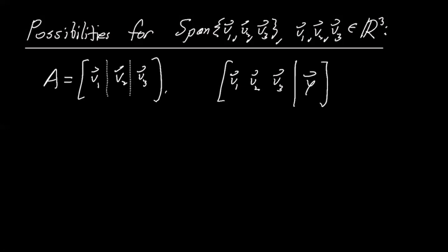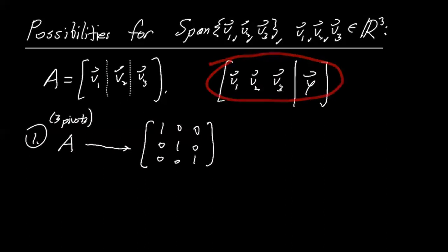And if A reduces to, so again, let me just give you some cases. So if A reduces to just the standard thing with three pivots, right? So this is the case with three pivots. Then that means this system here is always consistent no matter what Y is, right?